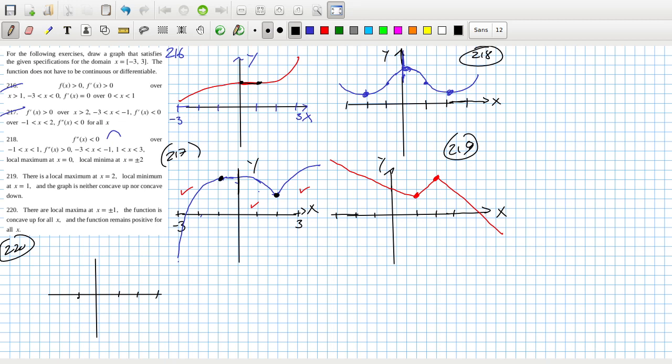One, two, three. One, two, three. There's a local maximum at one and minus one. The function is concave up all x. And, the function remains positive for all x. Doesn't say there can't be a minimum. But, I wonder if it's a function doesn't have to be continuous or differentiable. So, maybe to prevent further max or min, I'll have it asymptotically shooting up. Up to infinity at the origin like that.